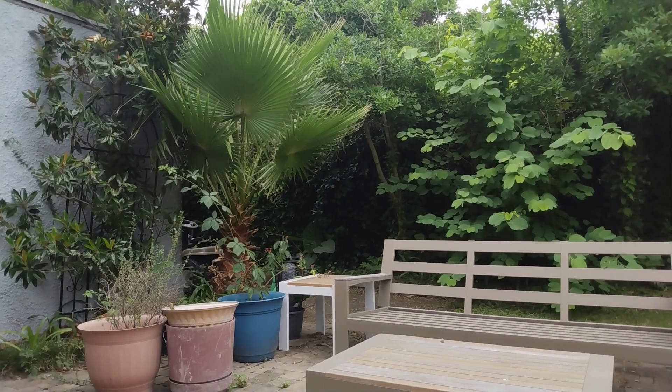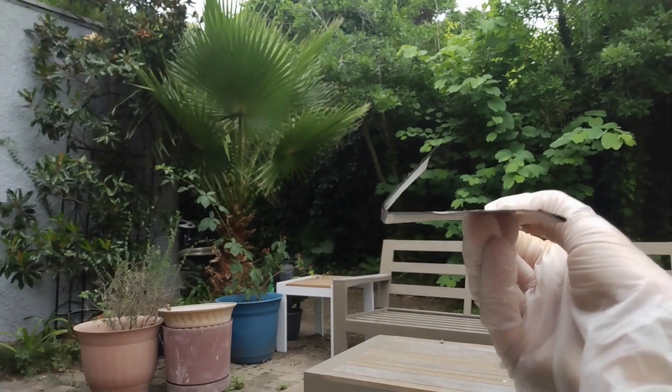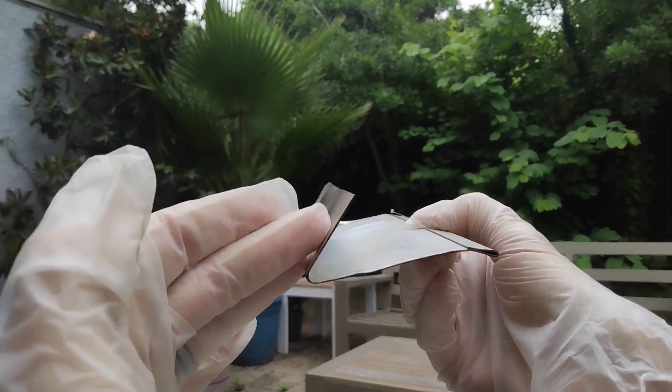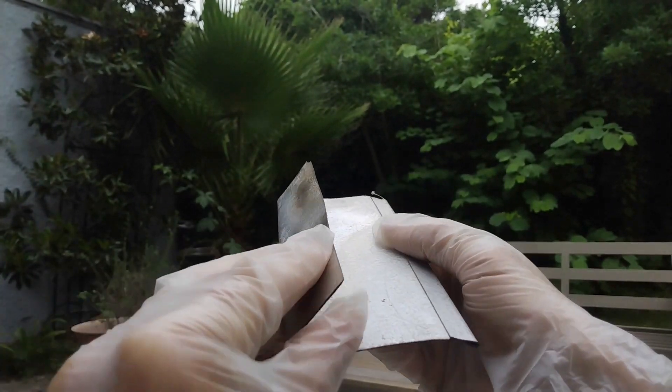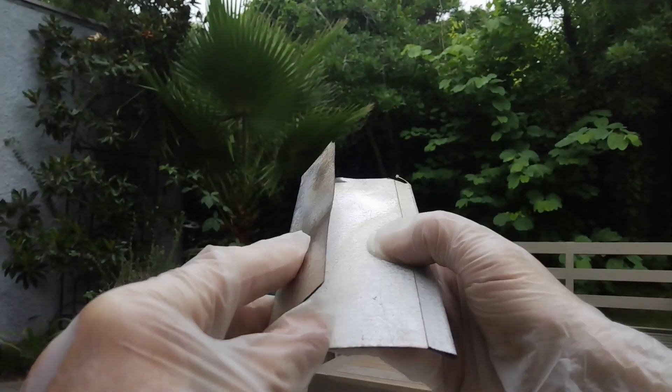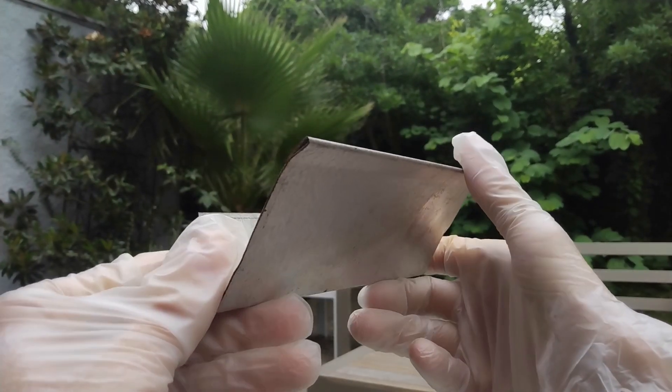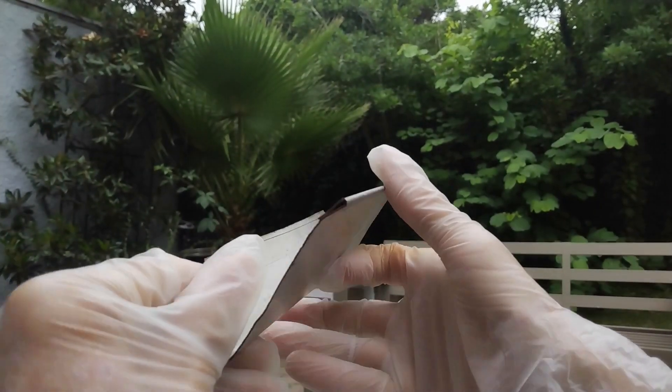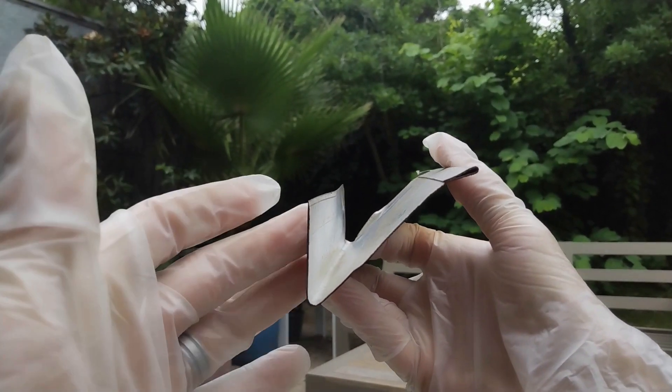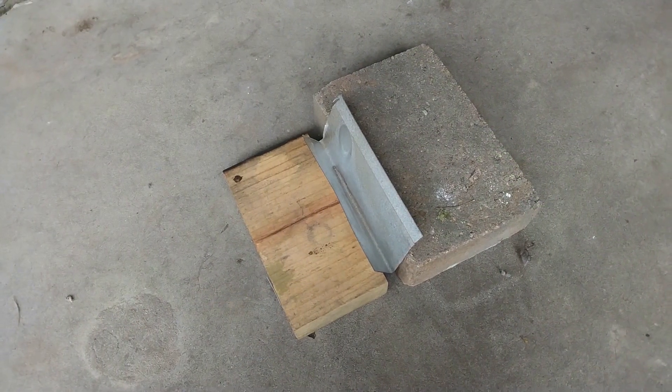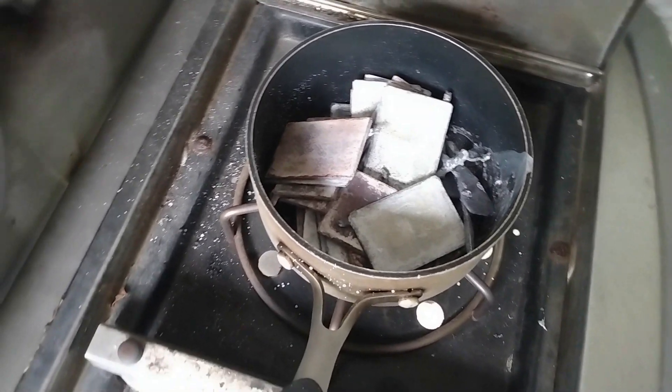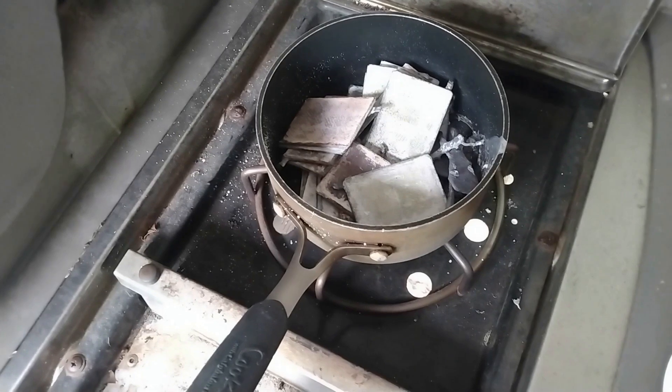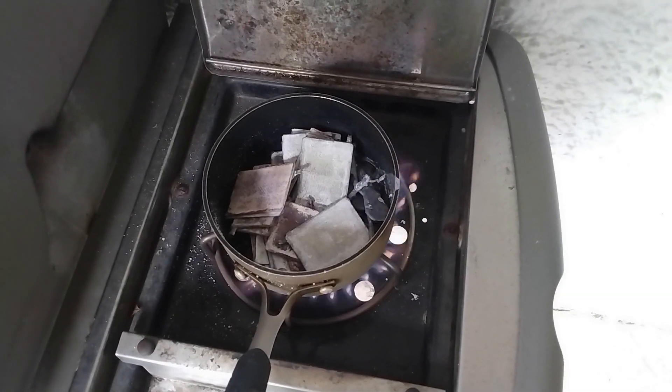Now, in order to give the lead the shape of an electrode, I'm going to pour it into this metal sheet that I folded in order to make an angle. Now, the metal, of course, you don't want it to be copper, otherwise the lead will just be soldered to it. But you can use aluminum or this, I think it's zinc. Anyway, I checked that the lead doesn't stick to it. So this is ready and let me put the lead onto the stove. Let's wait a little bit.